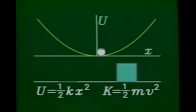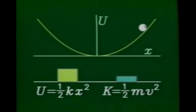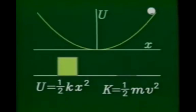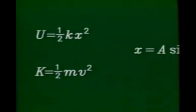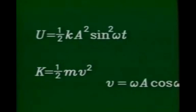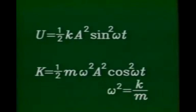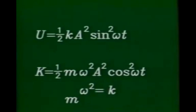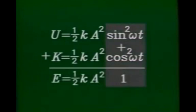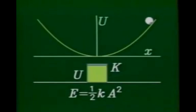Over time, there is a continual interchange between kinetic and potential energy. But even though both the potential energy and kinetic energy are always changing, the total energy is always constant.